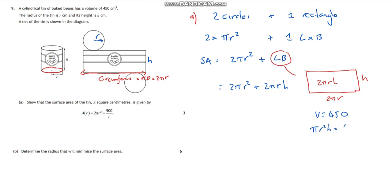Now what's the volume of a cylinder? That's pi r squared h, which is equal to 450. So can I get an equation maybe just for h on its own to get rid of that h? Yeah, it would be 450 divided by pi r squared, so I can substitute that in there.